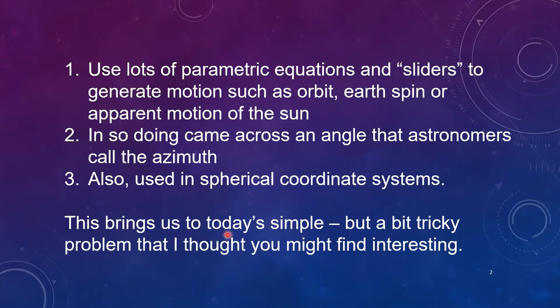So as you can imagine I end up using lots of parametric equations and sliders to generate motion such as orbit, spin of the earth, the apparent motion of the sun, movement of shadows and so on and that brought me to an angle that astronomers use that's called the azimuth.